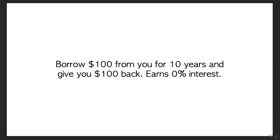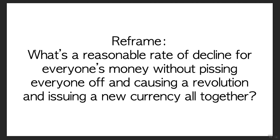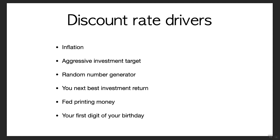The better question is: what is a reasonable discount rate — a reasonable rate of decline for money without causing a revolution or requiring a new currency? You can use inflation, your investment targets like 30% if you're aggressive, a random number generator, your next best investment returns as an opportunity cost, or even the Fed printing money. You can put a random number in there or use the first digit of your birthday — but we all know what the right answer is, so I'm not going to bother going through it.